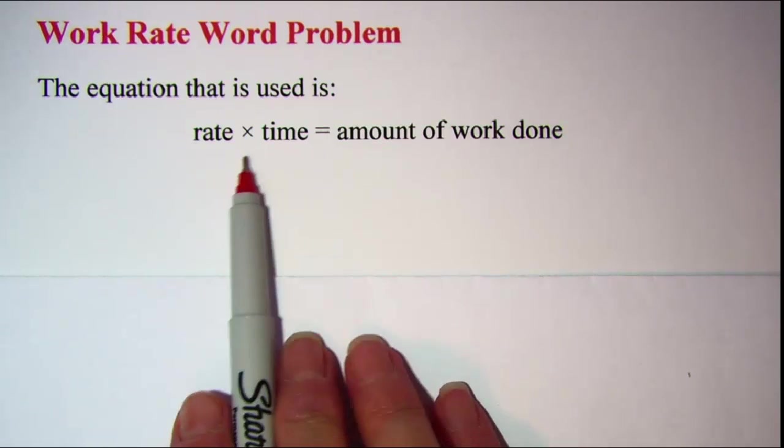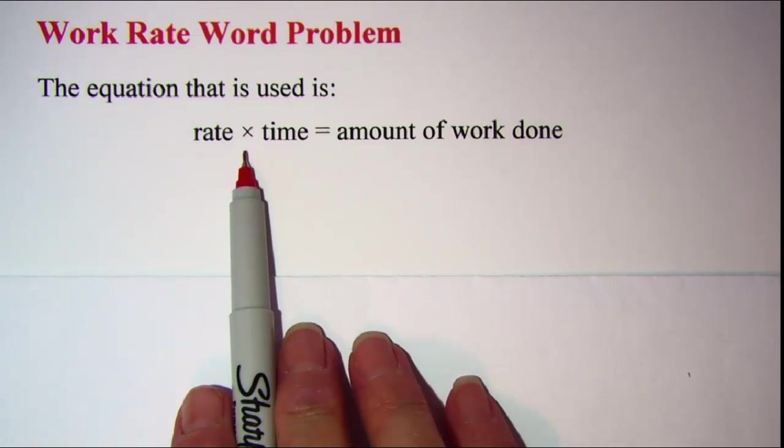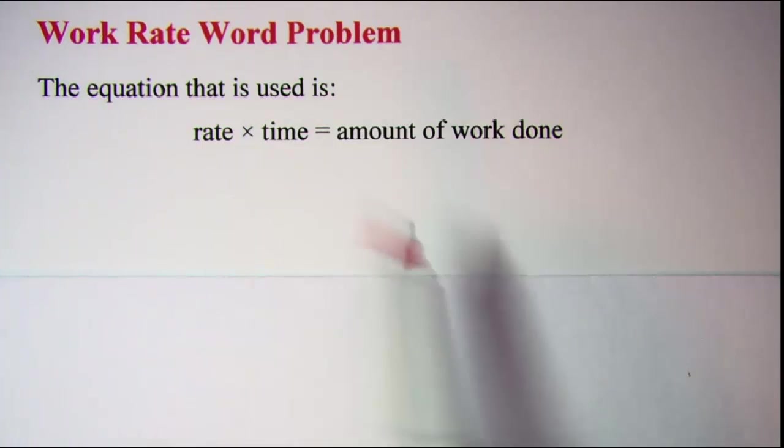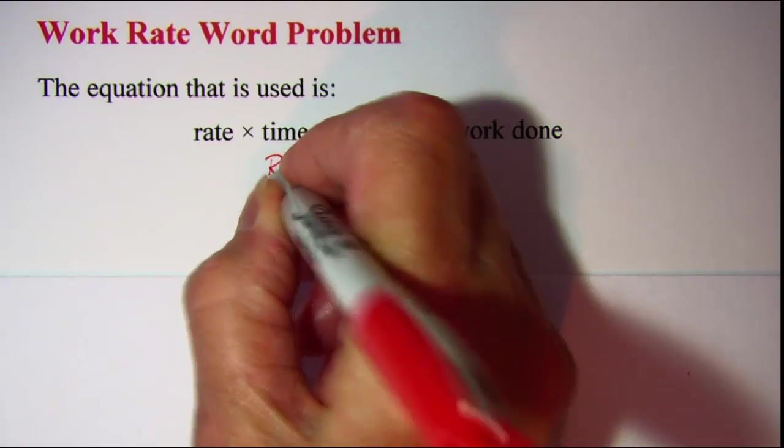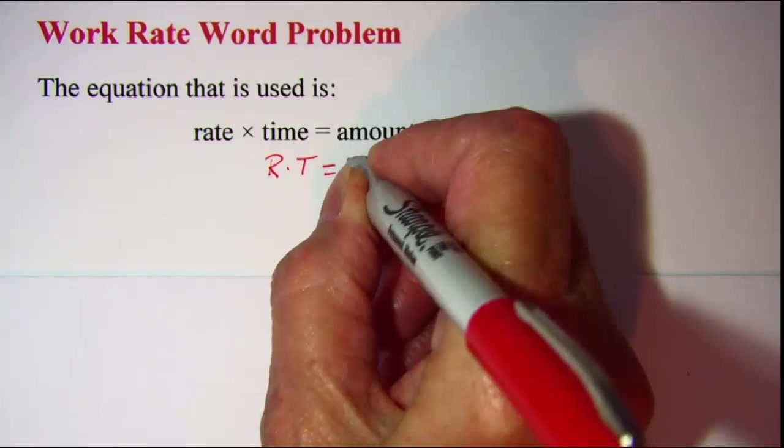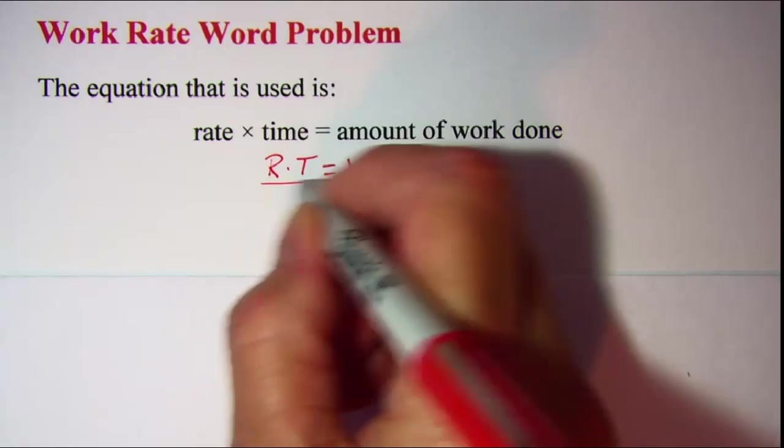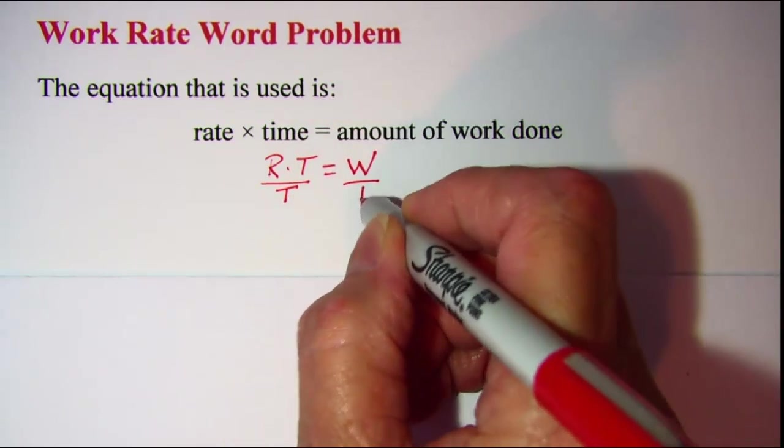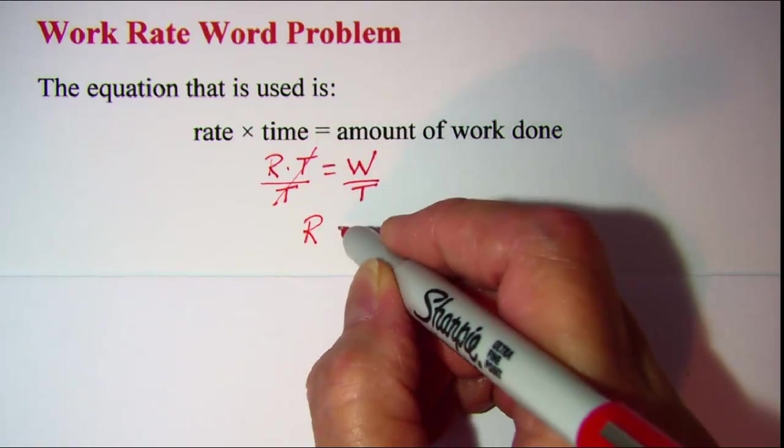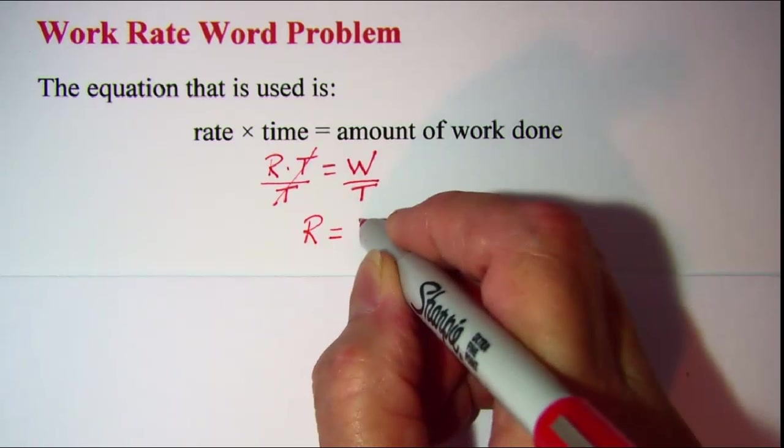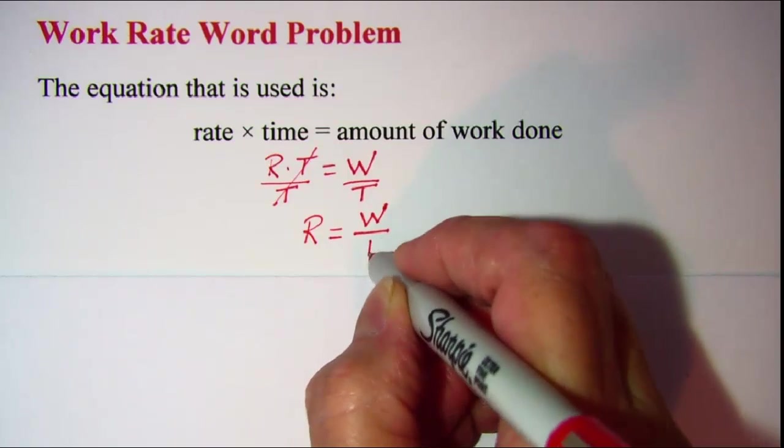Now sometimes with our problems we need to manipulate this equation and find the rate of work for someone. So if we wanted to take this equation rate times time equals amount of work done and find the rate, then we could divide both sides by t. The t's would cancel and we would get the rate that that person is working is equal to the amount of work they can get done over a certain time period.